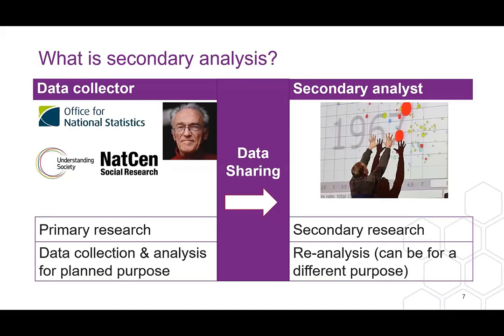So let's start with thinking about what secondary analysis is. Secondary analysis involves the use or reuse of existing data. We have data collectors who collect and use data for their own purposes — these include government or official agencies like the Office for National Statistics, large research organisations like NatCen Centre for Social Research, major academic-led projects like Understanding Society, and individual researchers like Peter Townsend who did seminal research around poverty. Following data collection and primary analysis, data is often archived, and with data sharing there are options to reuse it.